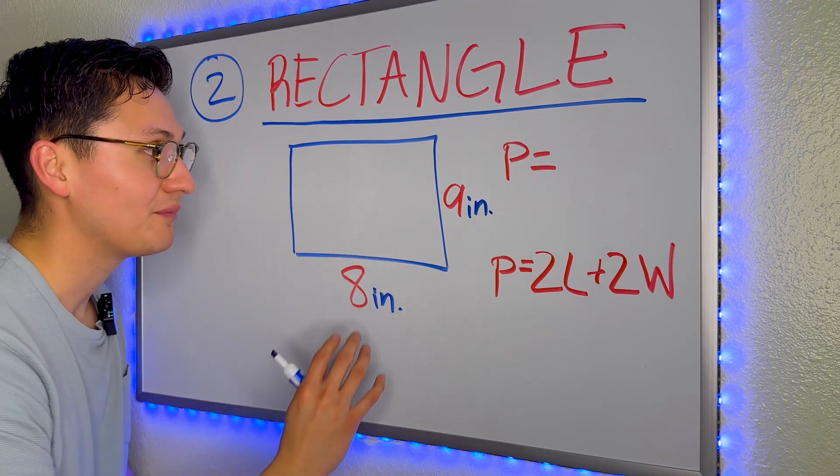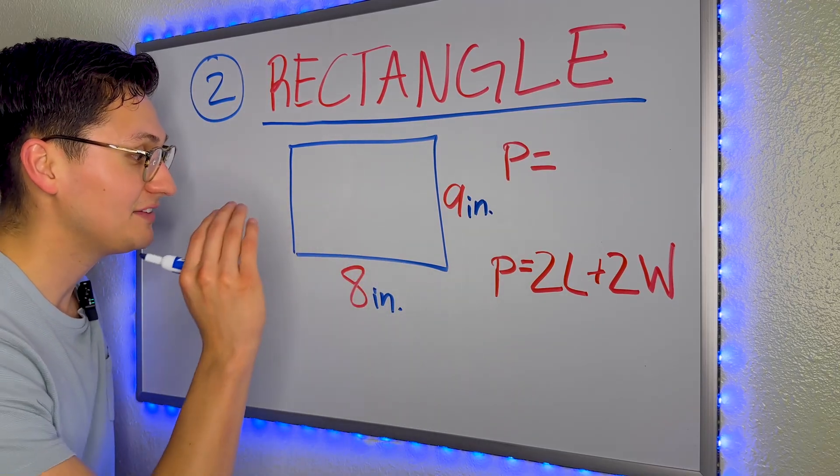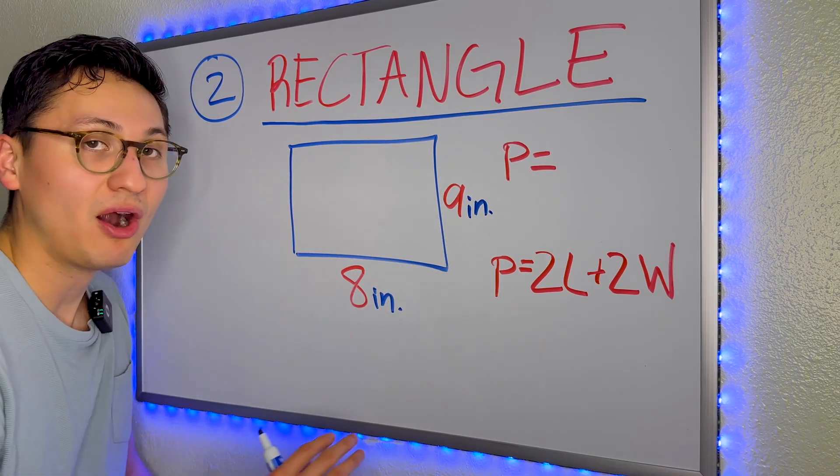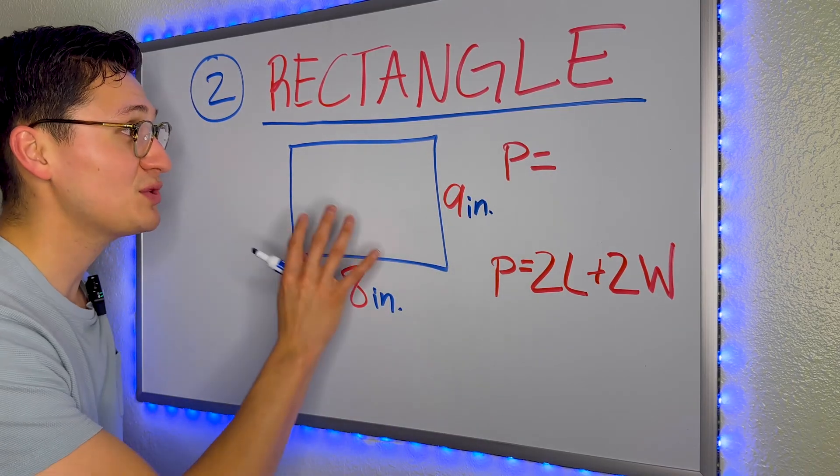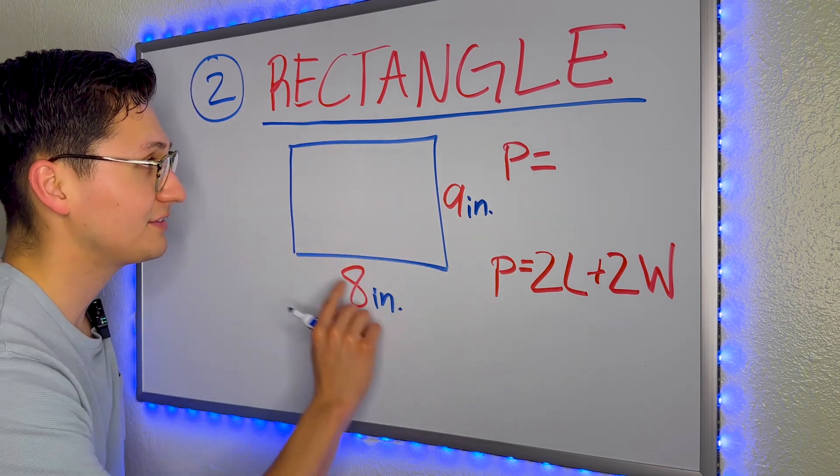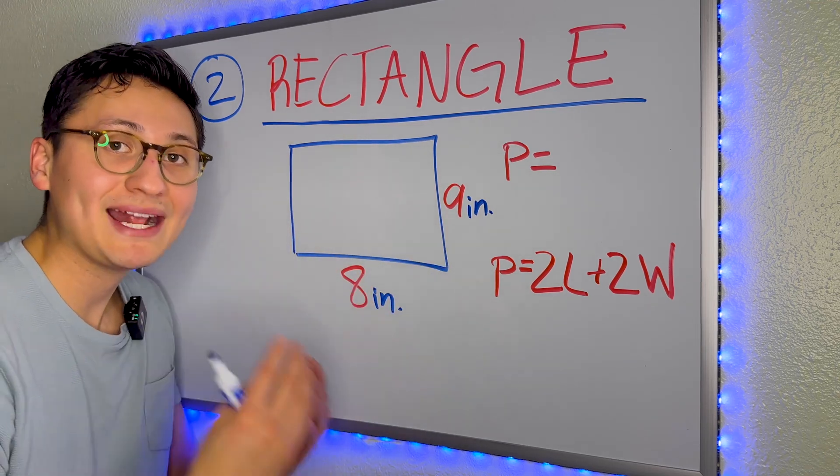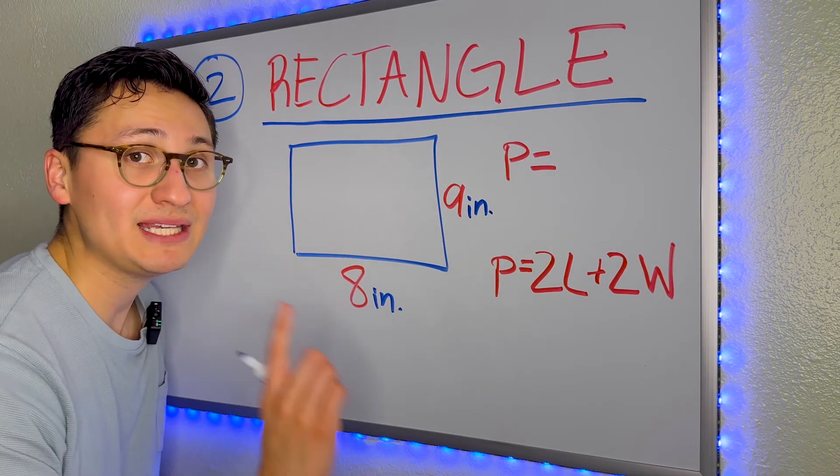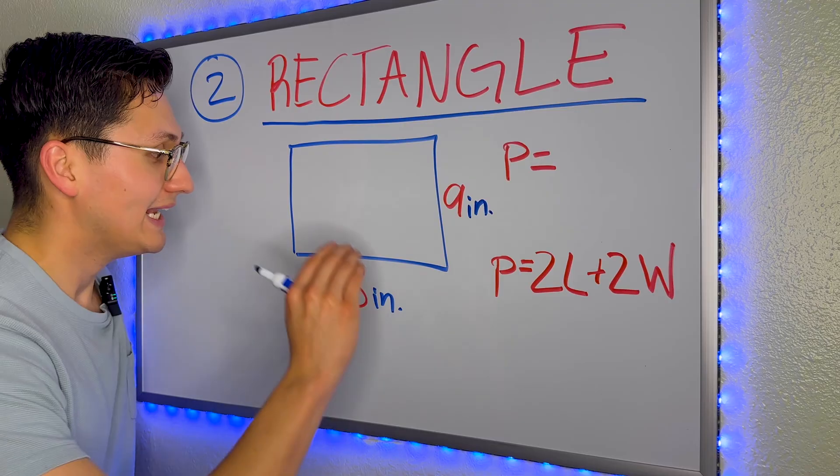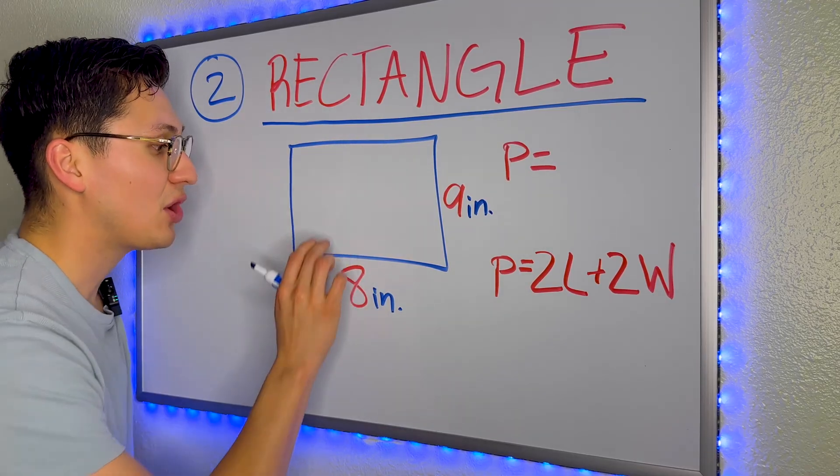For this second problem, we have a rectangle. And the way we know it's a rectangle, it's because the length and the width are unequal. They are different sizes. If this was a square, all the sides would be equal. But since it's a rectangle, the length and the width are different.